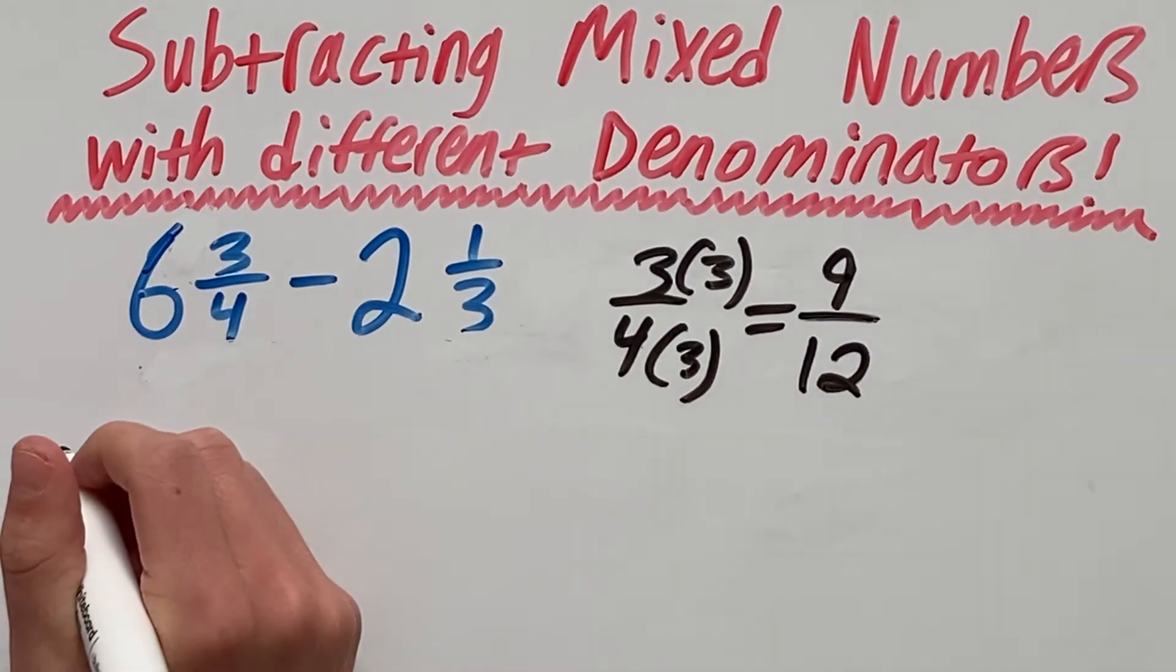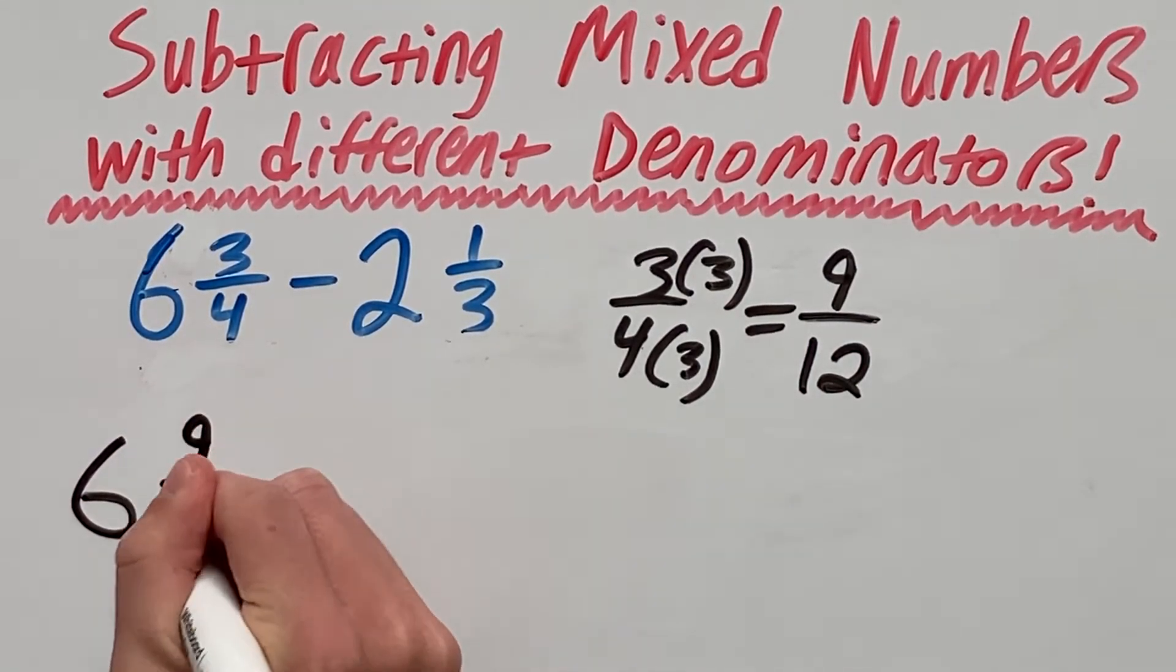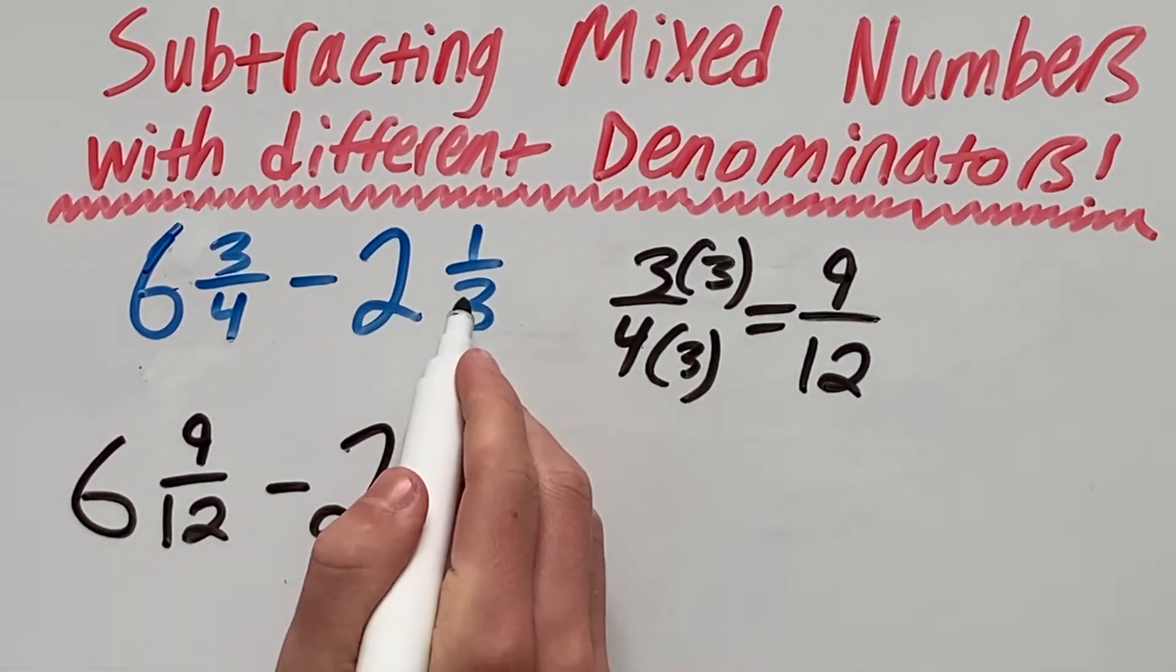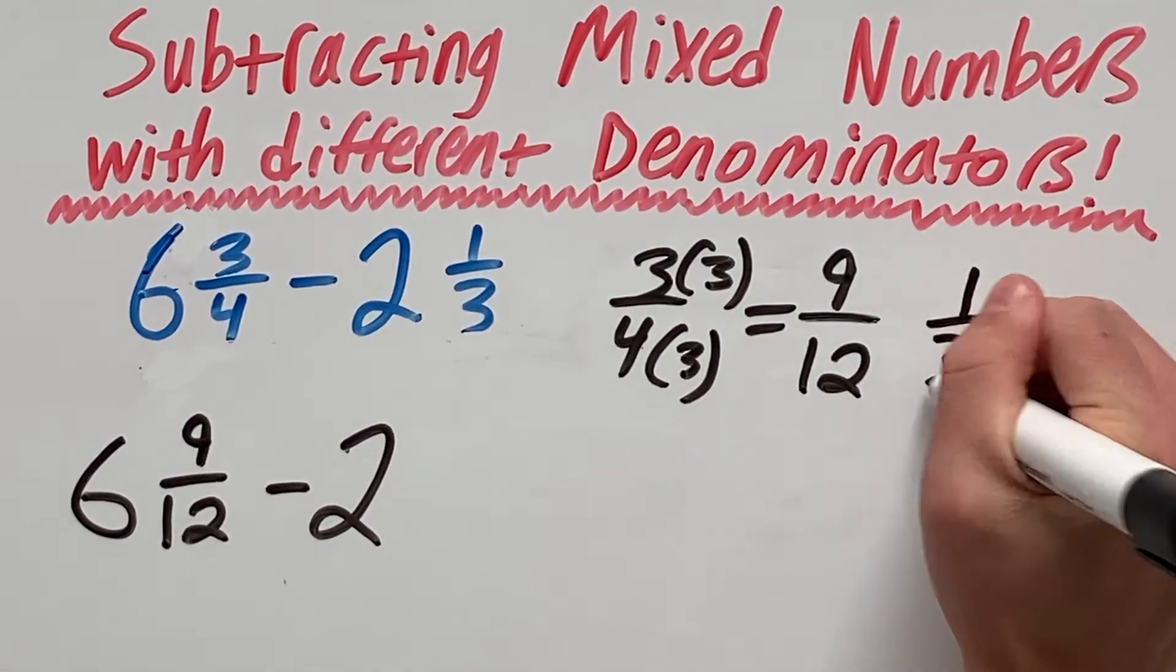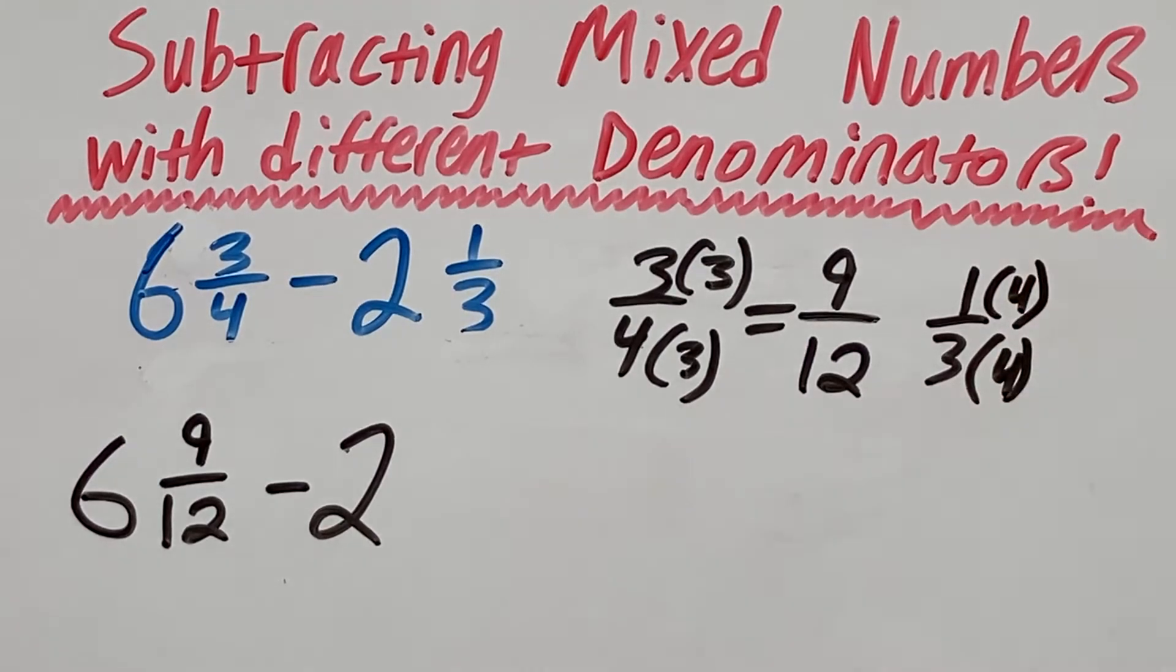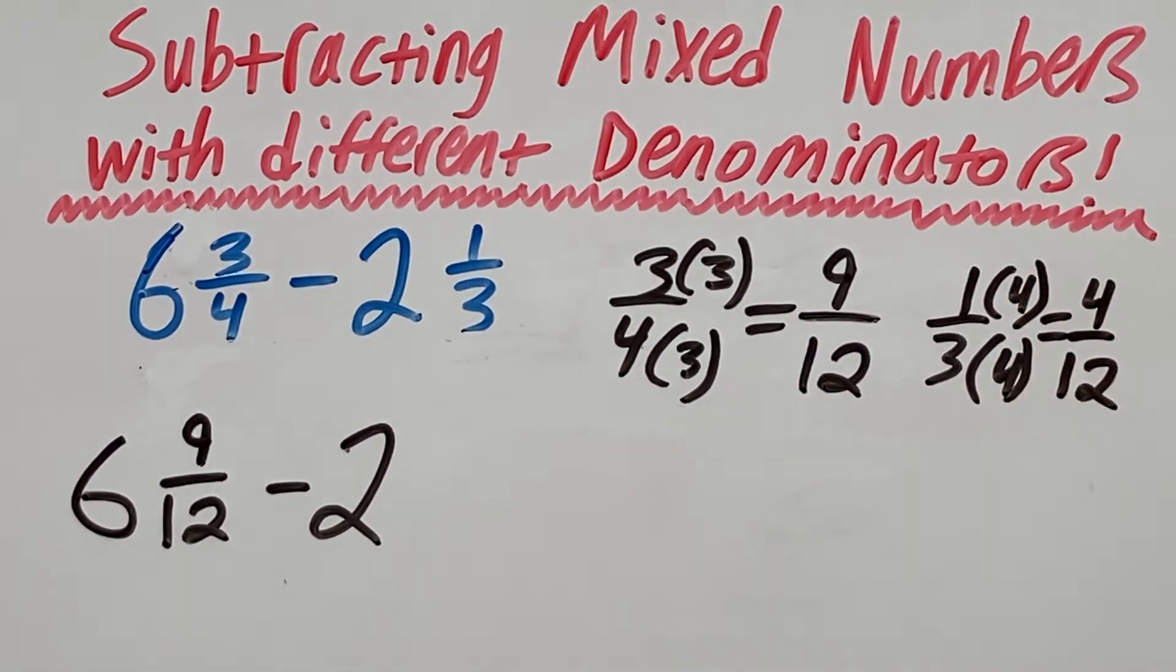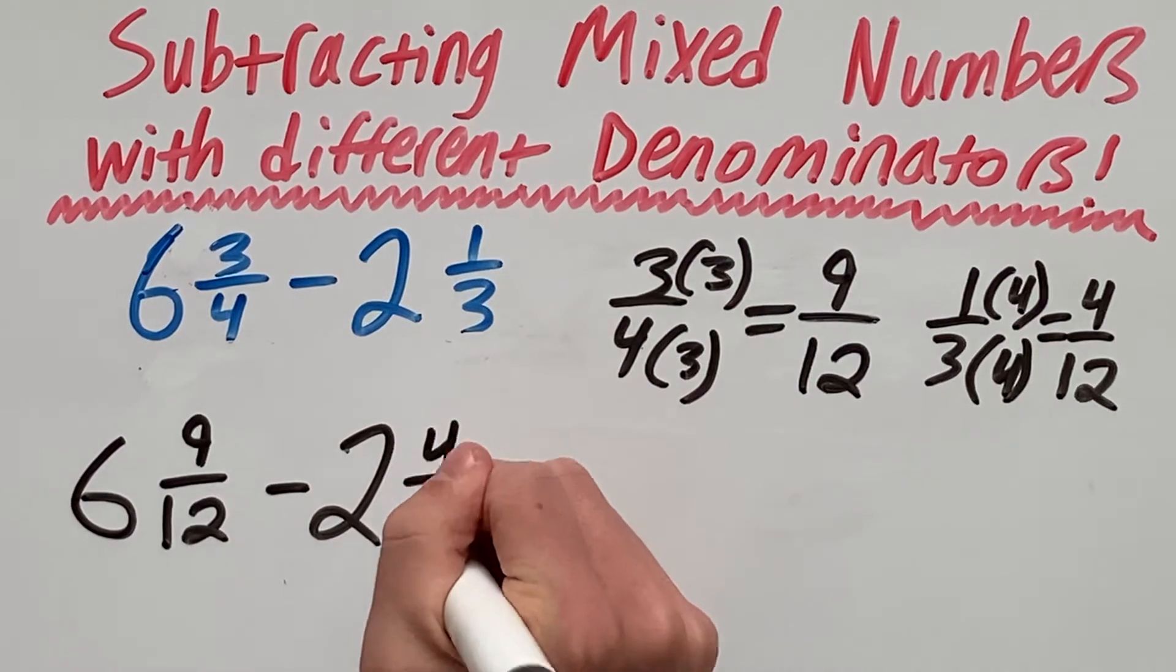So we can rewrite this as 6 and 9 over 12 minus 2. And to get 1 third with a denominator of 12, we can multiply the top and bottom by 4, which gives us 4 over 12. So 6 and 9 over 12 minus 2 and 4 over 12.